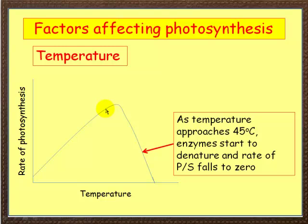So this is the optimum here — this could be about 35 to 40 degrees. As it goes over this peak, the heat starts to break the enzymes down, denature them, and so photosynthesis slows down. Eventually the enzymes will stop functioning. So that's temperature.